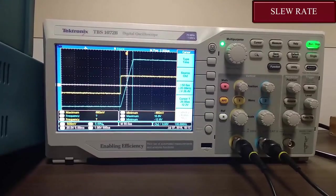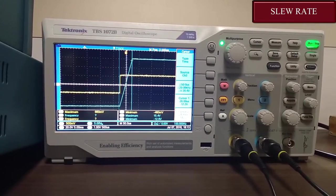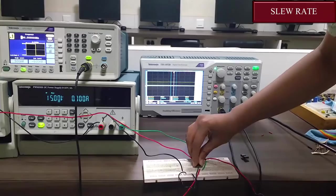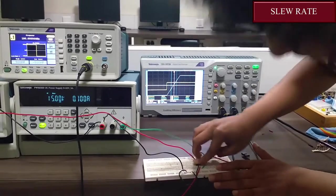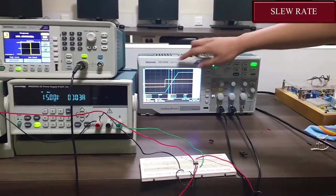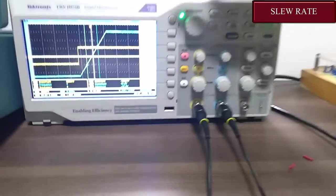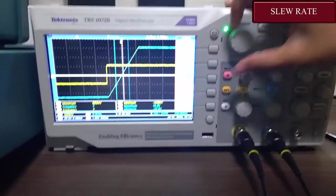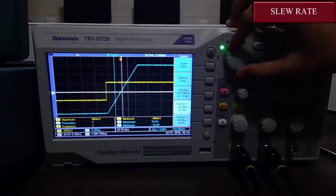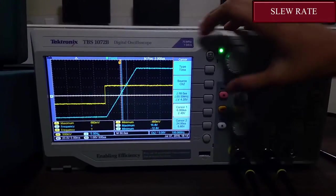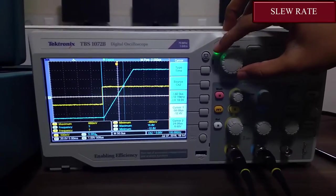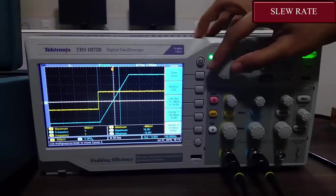Now let's see what is the slew rate for OP07. Now I am just changing it with OP07. Now here let's see what its change in voltage and change in time is. For doing that I am selecting cursor 1 and shifting it, and then cursor 2 here.